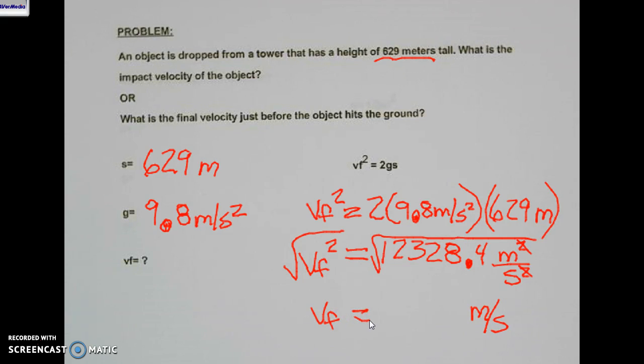So the only thing we have left to do is take the square root of that number. And we get that. And when we do that, we get 111.03. And that is our impact velocity or our final velocity for this problem. So the object, when it was dropped, just before it hit the ground, was traveling 111.03 meters per second.